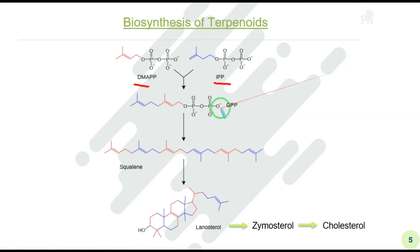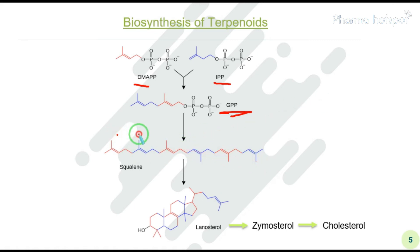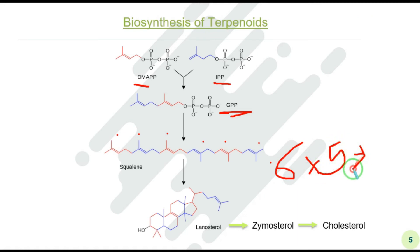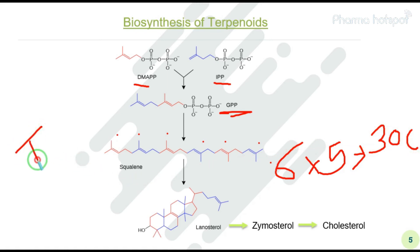When DMAPP and IPP link together, they form GPP — geranyl pyrophosphate. From GPP, we get squalene, which has six isoprene units (1-2-3-4-5-6). Six isoprene units means three pairs, so squalene must be a triterpenoid with thirty carbons.